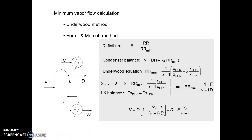In the previous video, we derived the Porter and Momo equation for calculation of vapor rate. The equation V = D + F·RF·(α - 1) is based on certain assumptions. One assumption is that the light key goes only into the distillate and the heavy key goes only into the bottoms. These assumptions help simplify the equations. We write the material balance equation V = L + D, then take D as a common term and write 1 + L/D.